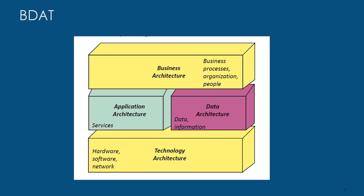Finally, the technology architecture shows how it enables the logical and physical data components and the architecture vision. It basically describes the logical software and hardware capabilities that are required to support the deployment of business, data, and application services. This includes IT infrastructure, middleware, networks, communications, processing, standards, and so on.